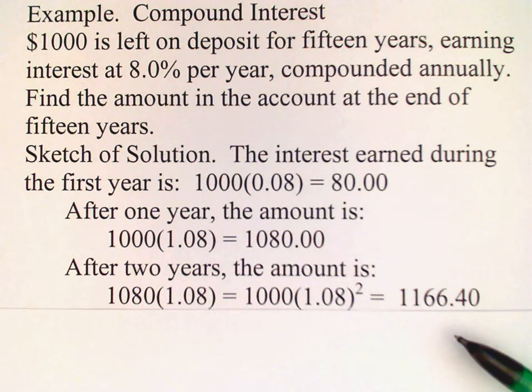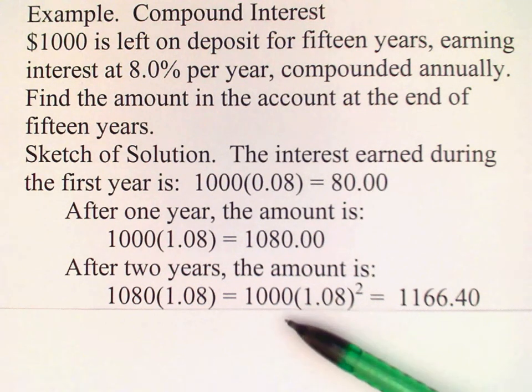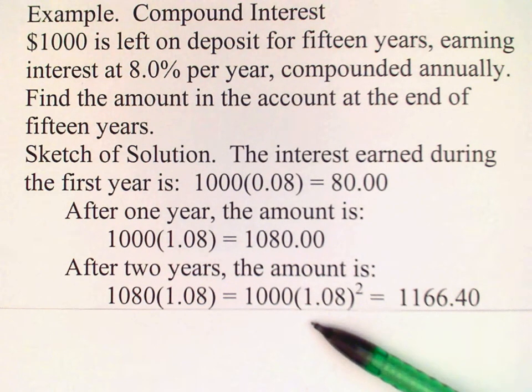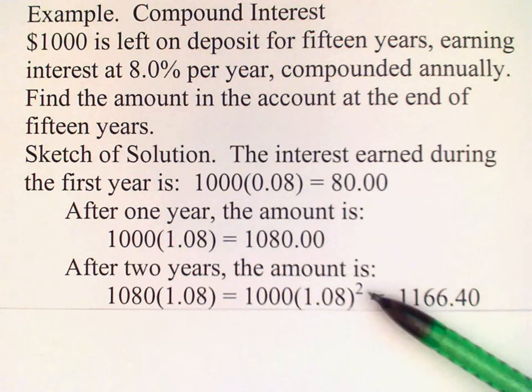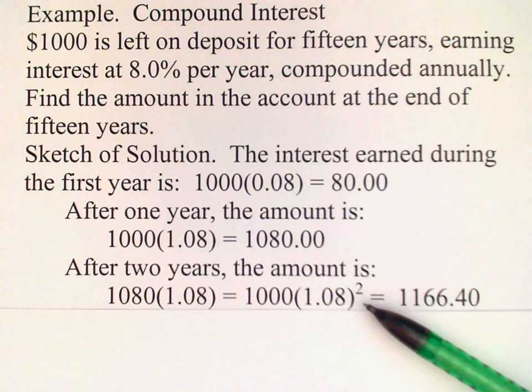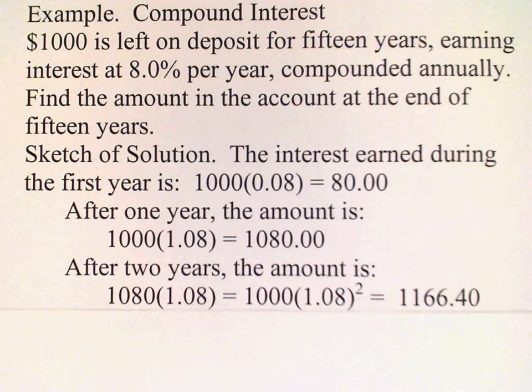Now a shortcut to getting this answer is just to start with the one thousand and then multiply by 1.08 raised to the second power. Notice this exponent is the number of years that that money has been on deposit. And if we continue in this way, after fifteen years...